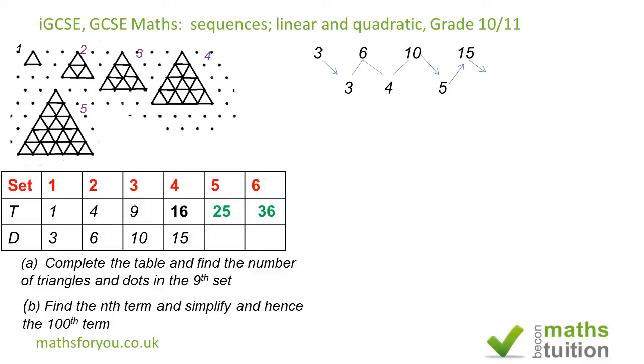So if you add 6 to 15 you should get 21, and if you add 7 to 21 you should get 28. So now I've got the 1, 2, 3, 4, 5, 6 terms there, and then we're supposed to find the 9th set.